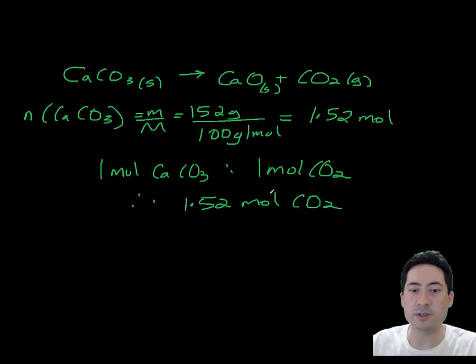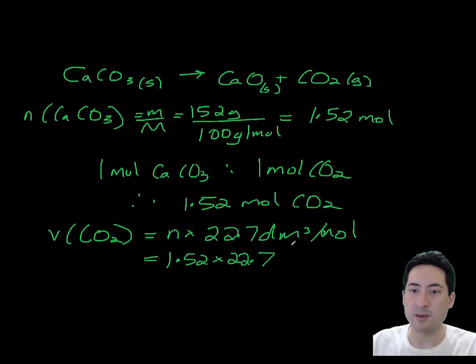We then times that out. It's a ratio - you could do cross multiplication. One mole is to 22.7, so 1.5 moles is to how many liters. When you times that out, or you could turn that into a formula like here, that gives you 34.5 decimeters cubed.